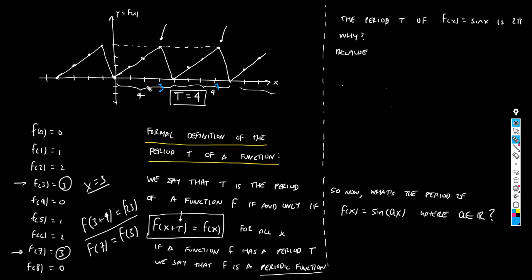The same holds for any value on the x-axis. The period is a number T that satisfies f(x + T) = f(x), and T = 4 is confirmed here. If there exists such a number T, we call T the period and f a periodic function. That is the formal definition.